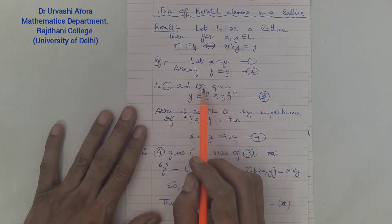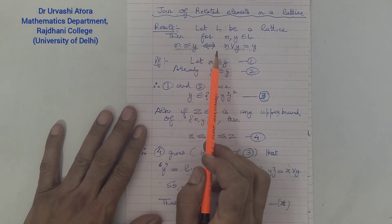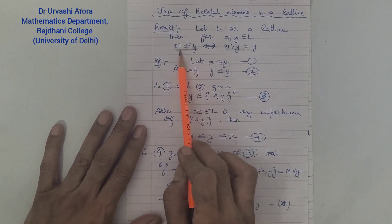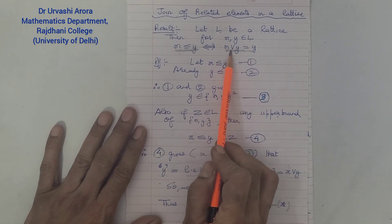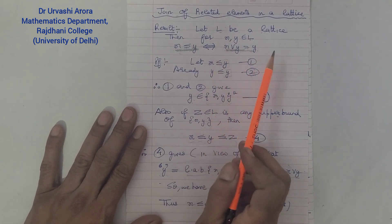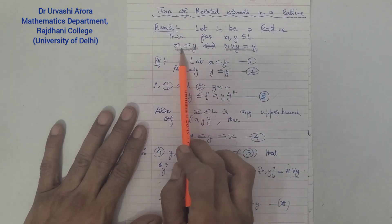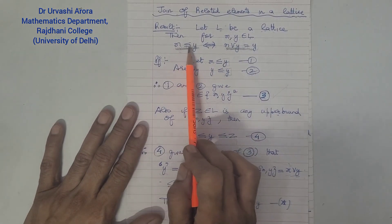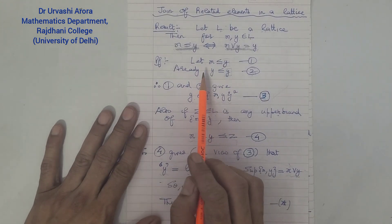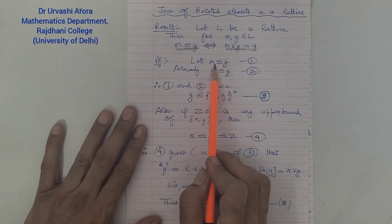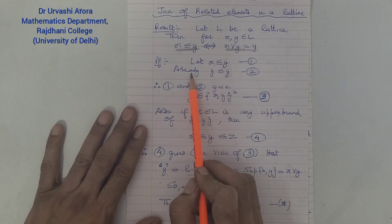Now let me prove this result. We will show both-way implications. First, we assume that x is less than equal to y and show that the join of x and y is y. Then we assume that the join of x and y is y and show that x is less than equal to y. For the first part, let x ≤ y — I'm marking this as (1).